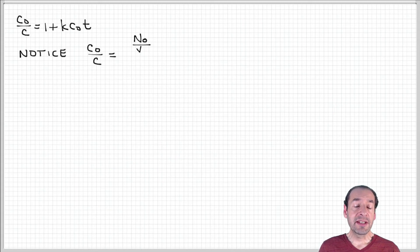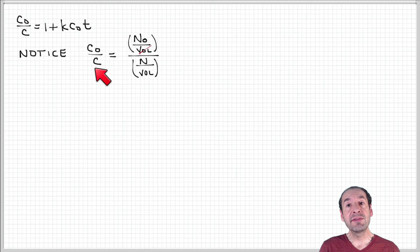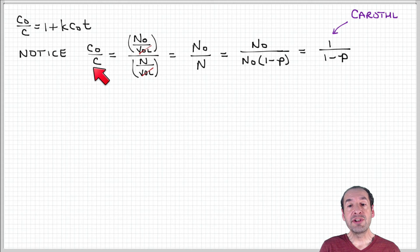Notice that I can relate this ratio C naught over C to quantities we've already determined. These are concentrations like molar concentrations, moles per liter, which is a number per unit volume. I can equivalently express this concentration ratio to a number or molar ratio.